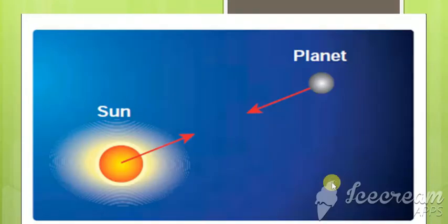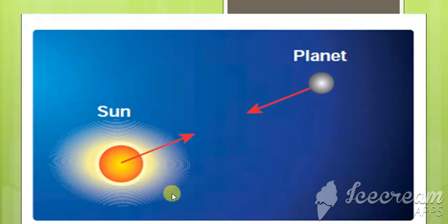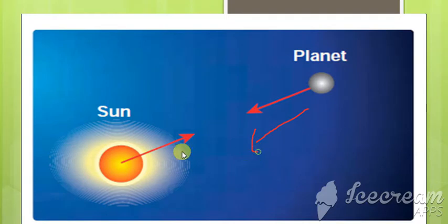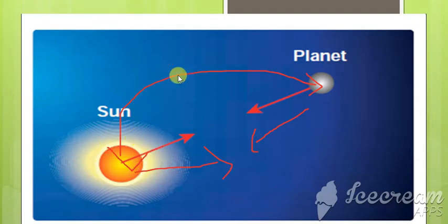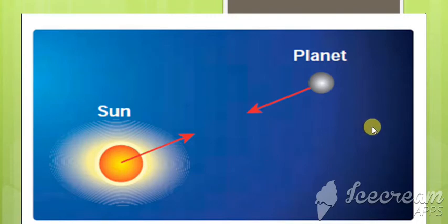Consider an example of the sun and any planet. This planet is moving around the sun because of the force between the planet and the sun. Are they in contact? No, they are not in contact. So the force between these two is a non-contact force — specifically, a gravitational force.